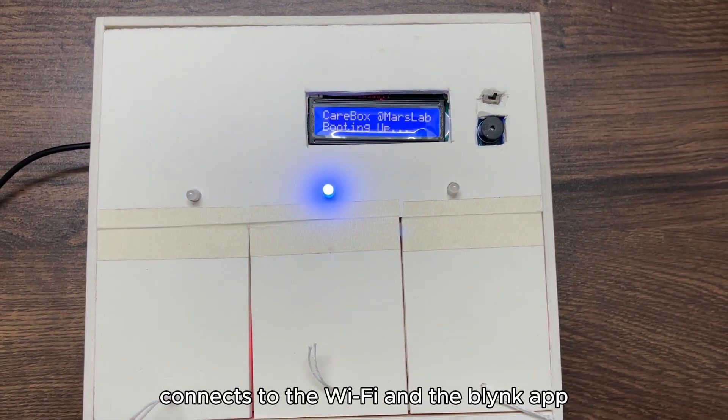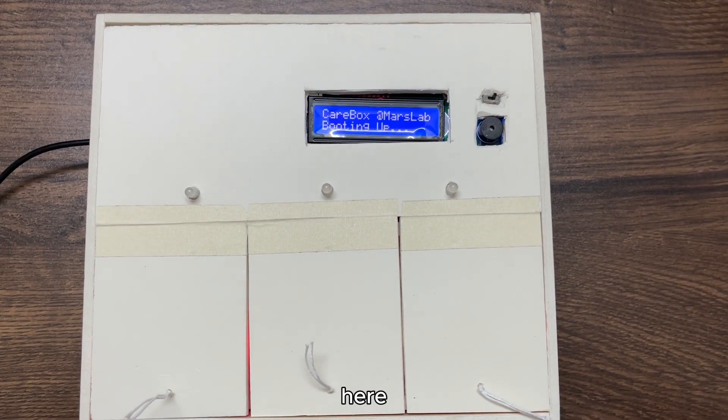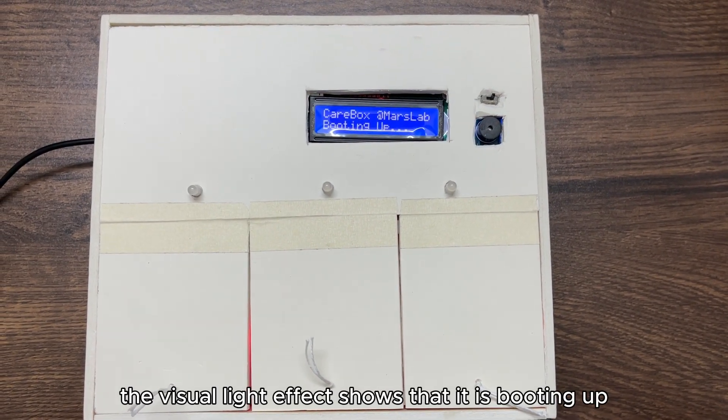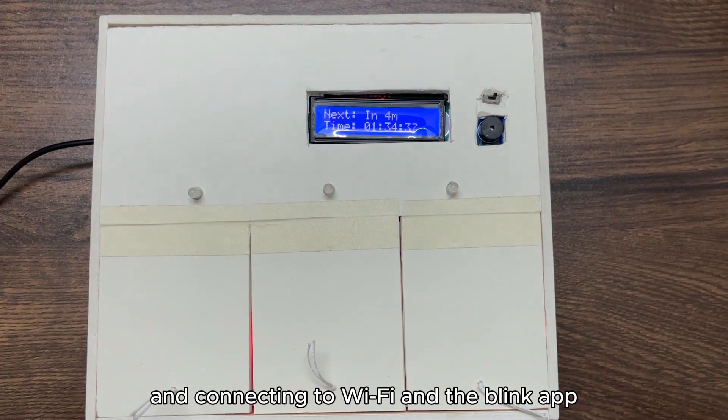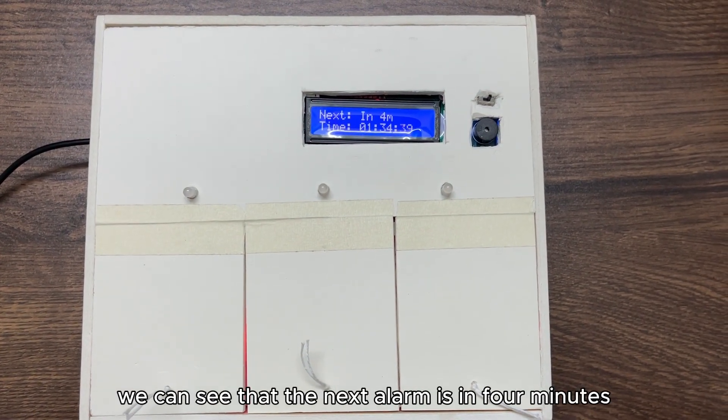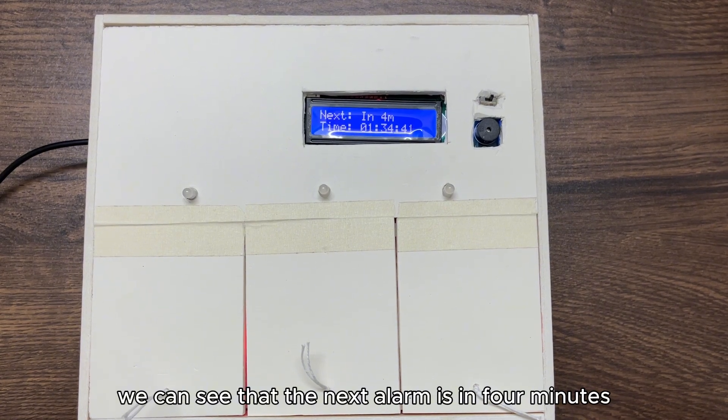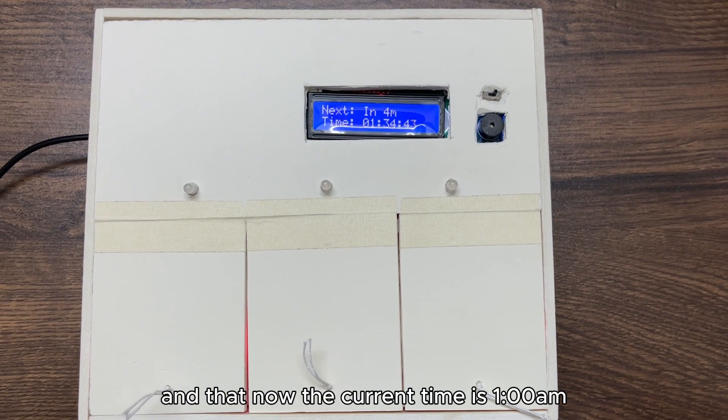Connects to WiFi and the Blink app. The visual light effect shows that it is booting up and connecting to WiFi and the Blink app. We can see that the next alarm is in four minutes and now the current time is 1:34 AM.